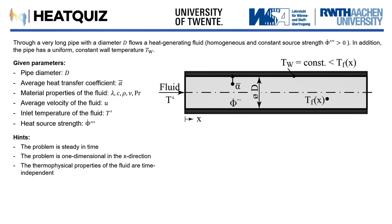This demonstration will focus on the flowing fluid inside a pipe. As the fluid travels along the axial direction, it loses heat to the environment, but it also generates heat internally through, for example, an exothermic chemical reaction.